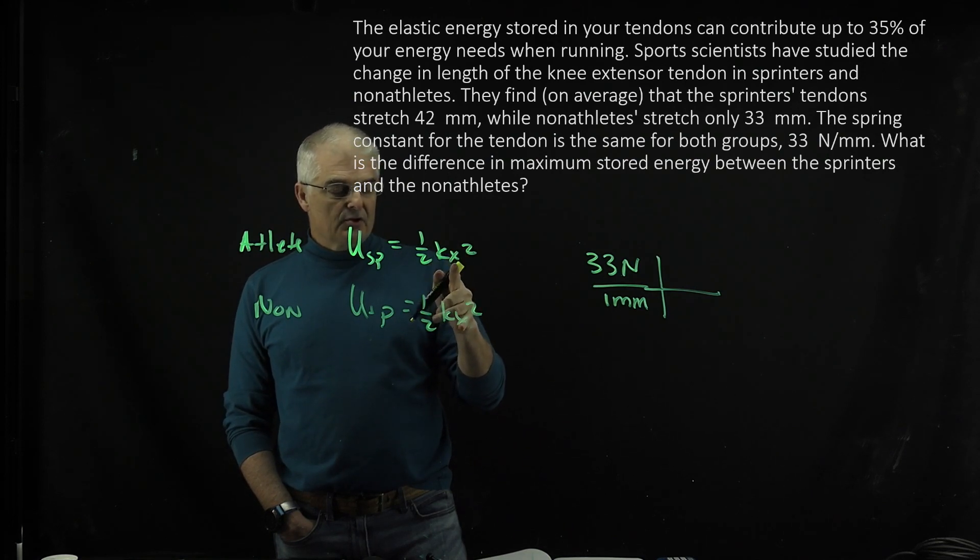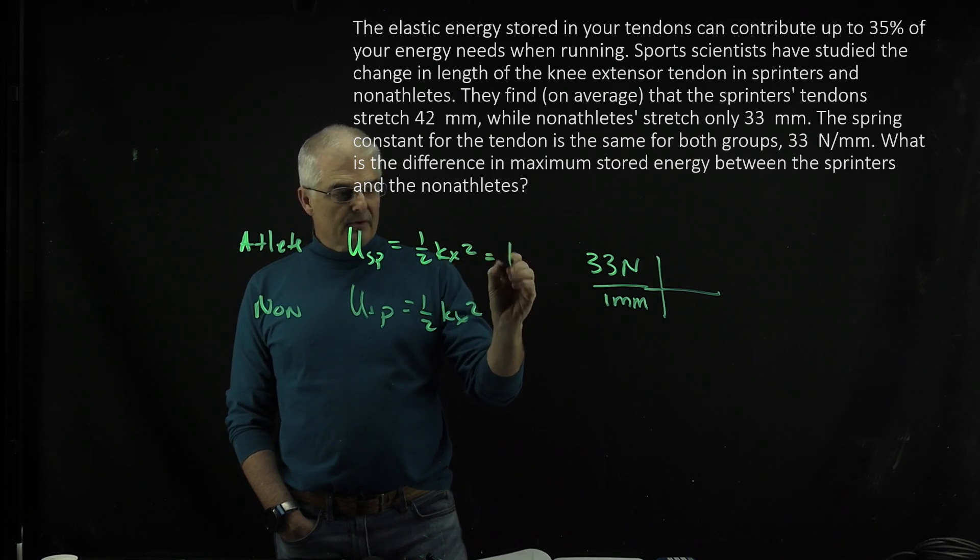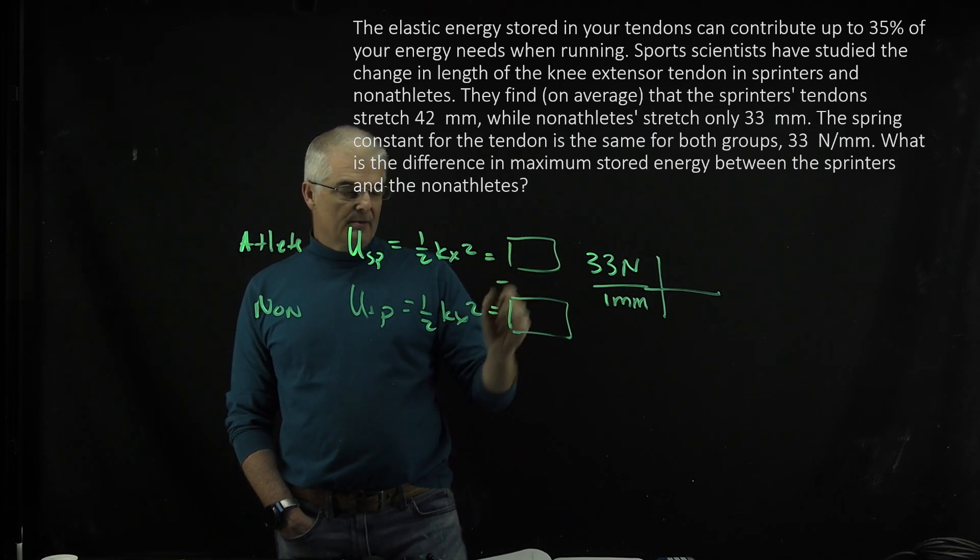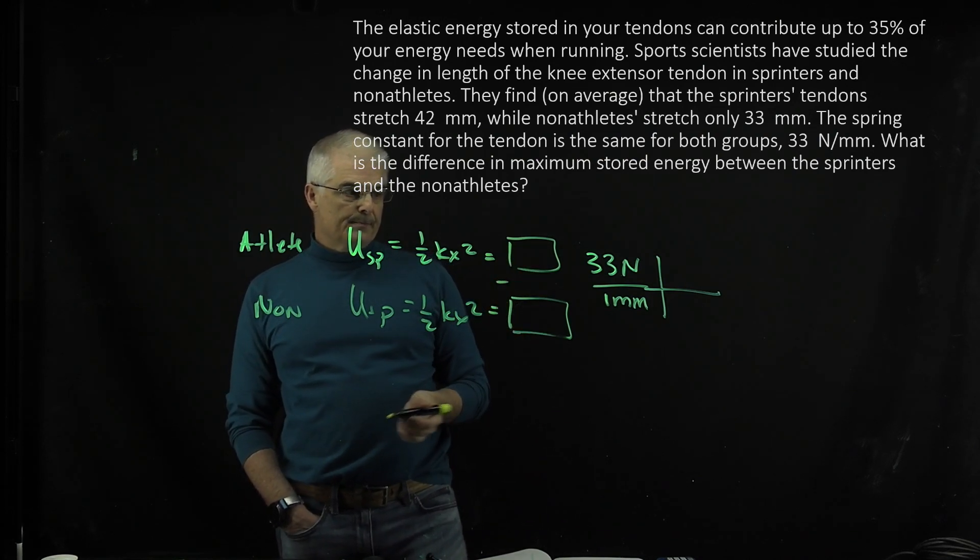So what I would encourage you to do is solve everything into the appropriate meter units. Plug it in, get this number, the athlete joules, and then the non-athlete joules with their different knees, and then you will subtract these two numbers to get your answer. Thank you.